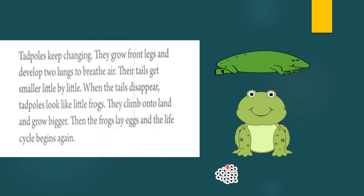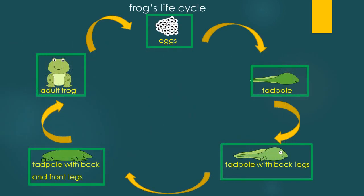The life cycle begins again and again. Let's review the frog's life cycle. The first stage is egg. Frogs lay their eggs in the water, then tadpoles hatch from the eggs with tails to swim and gills to breathe. Then tadpoles eat, grow, develop their back legs, keep changing — their tail disappears, front legs appear, and they breathe with their lungs. They change and become adult frogs.